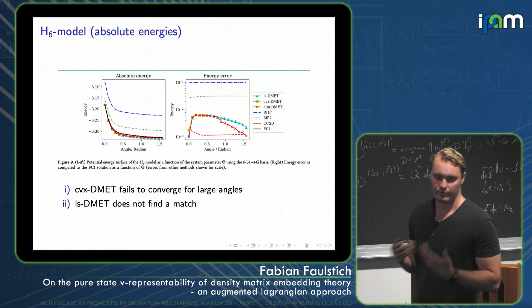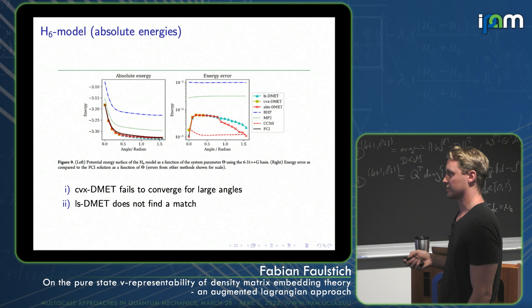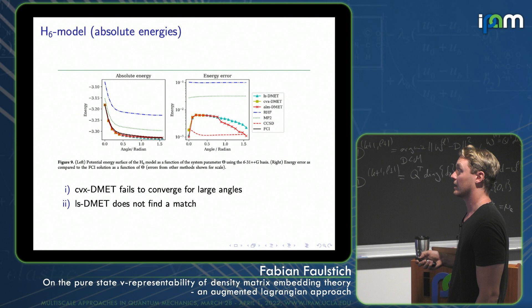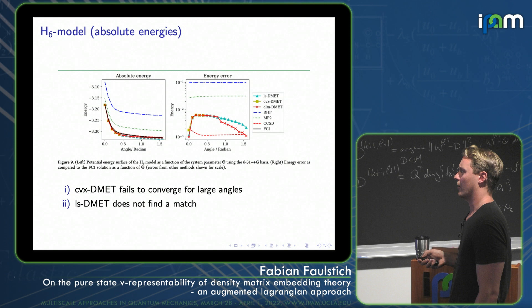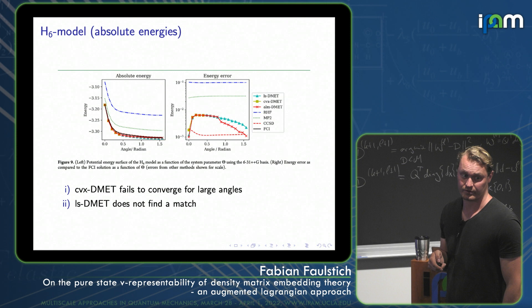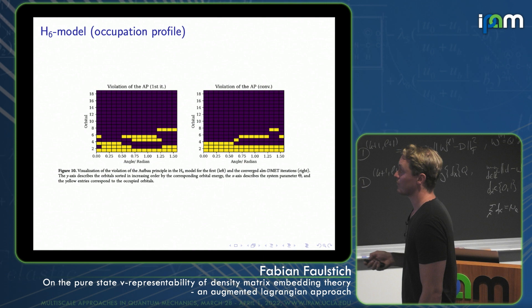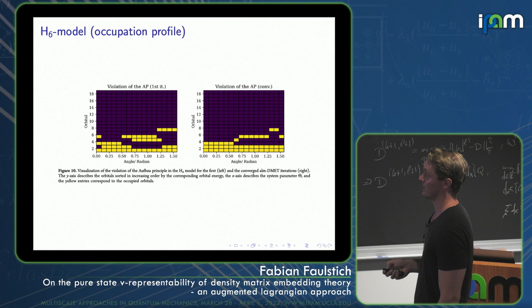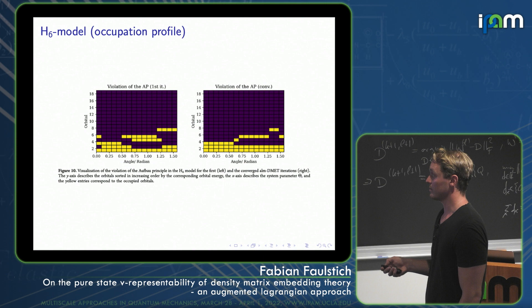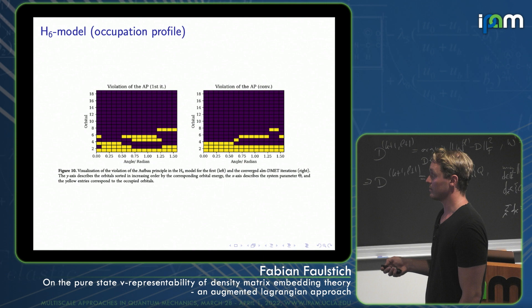Looking at energies for the H6 system: we have RHF, MP2, full CI (the benchmark black line), and CCSD, which is really good for this system. CVX DMET eventually fails where it reports a vanishing gap. LS DMET also reports a vanishing low-level gap and the fit gets terrible. ALM DMET yields the same result as CVX and LS DMET where the gap is significantly large, then somewhat follows LS DMET's trajectory but goes down to yield better energies — with the fit always at accuracy of 10⁻⁷. However, ALM yields a discontinuous potential energy surface, which is very concerning.